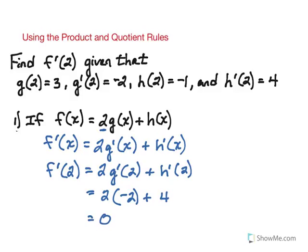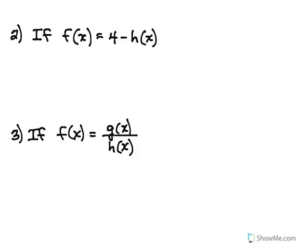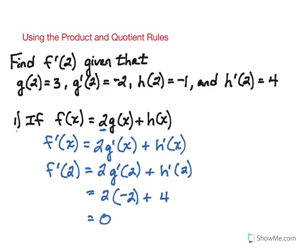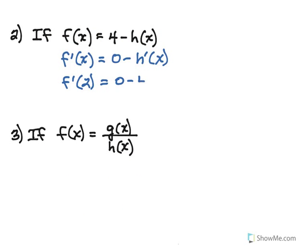Now we're told f of x is 4 minus h of x. The derivative of 4 is 0, so f prime of x is 0 minus h prime of x. Evaluating specifically f prime of 2: we have 0 minus h prime of 2, which was given to be 4, giving us negative 4.